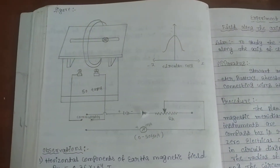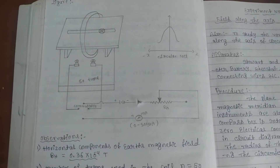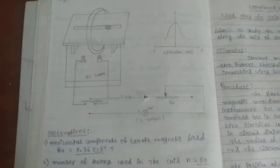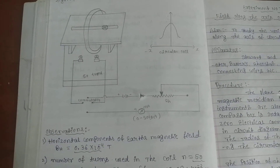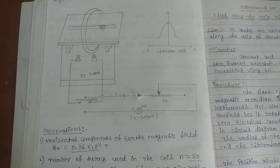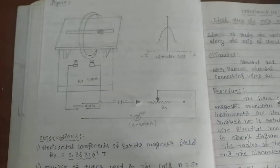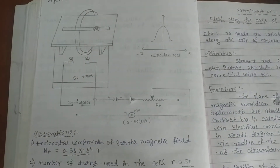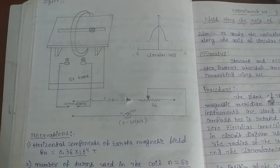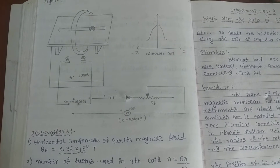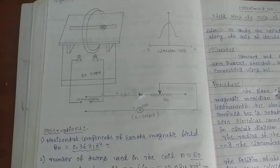From the tangent galvanometer, a number of turns has to be connected to the commutator key. Out of the two keys of the commutator, one key is connected to the battery, then the other end of the battery is connected to the rheostat, and the other end of the rheostat is connected back to the commutator key again. You can see the connections here.